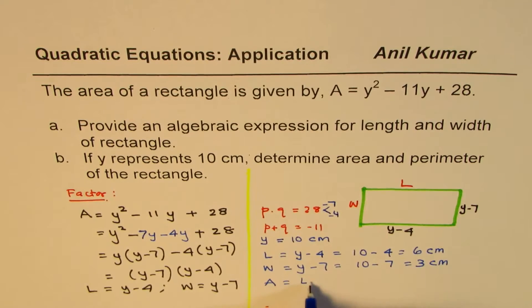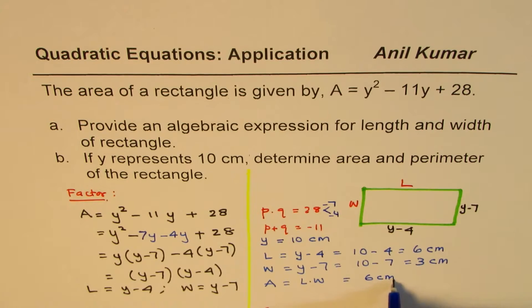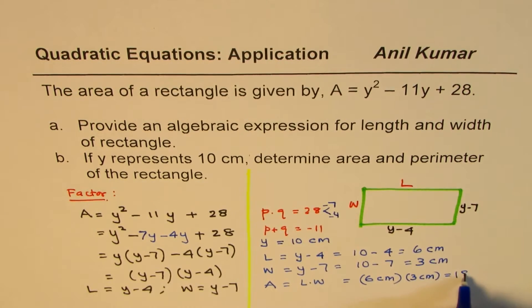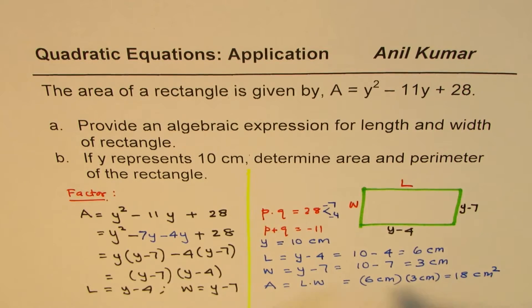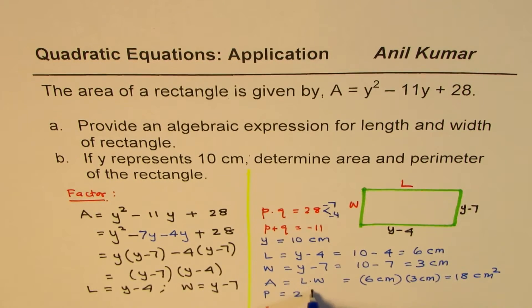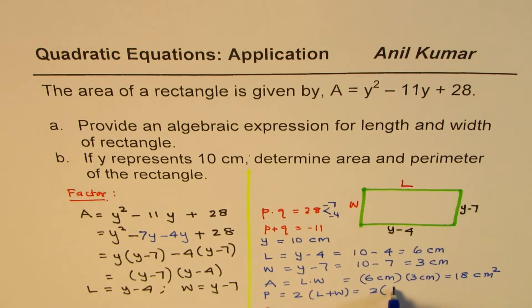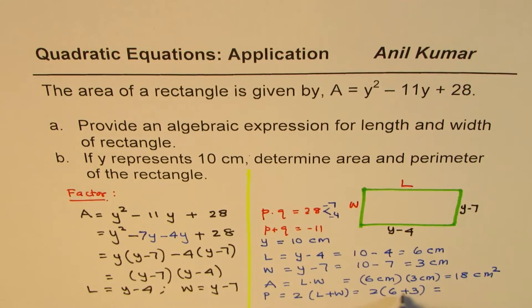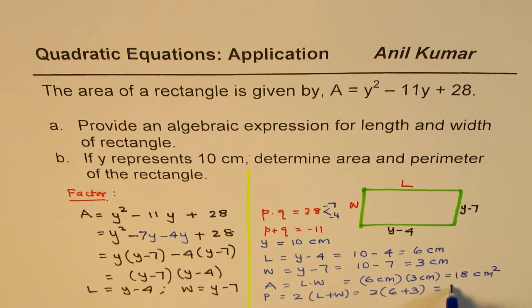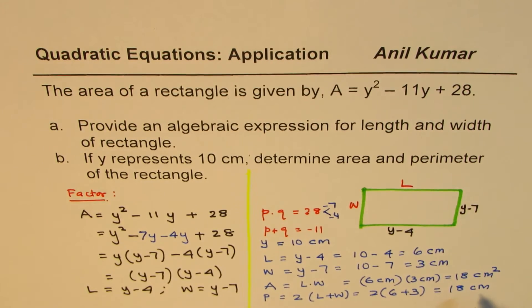Area equals length times width. So area will be 6 centimeters times 3 centimeters, and that gives us 18 centimeters squared. As far as the perimeter is concerned, it is twice length plus width. So that gives twice 6 plus 3. The units are centimeters. So we can add and multiply by 2. 9 times 2 is 18, and we get 18 centimeters as the perimeter in this case.